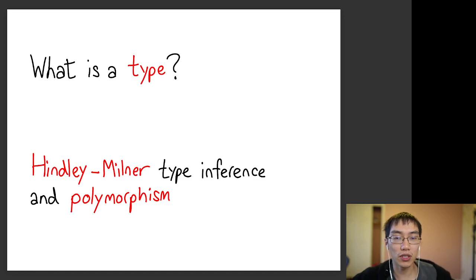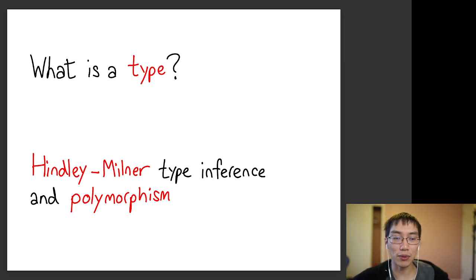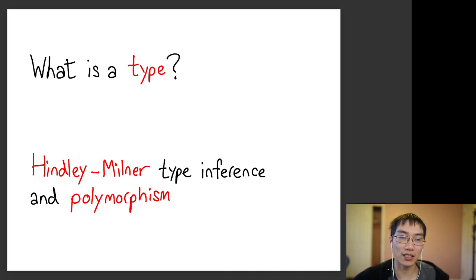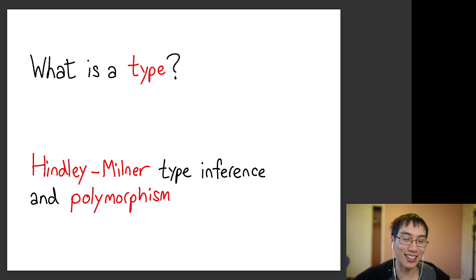There are two parts to this lecture. First, I want to talk more about what types are — we've sort of glossed over it. I've said things like 'in Haskell everything is strongly typed,' we've talked a little about polymorphism, but I want to dig deeper. The second part will cover Hindley-Milner type inference, which is the underlying basis for type inference in Haskell — basically how the Haskell type checker figures out whether your program is well-typed or not.